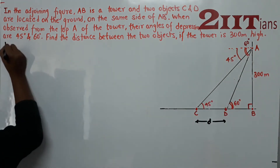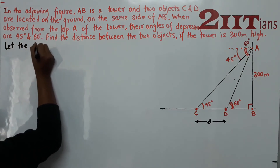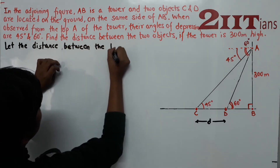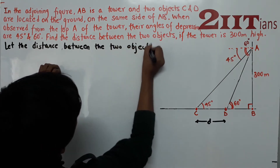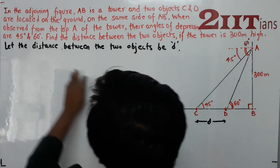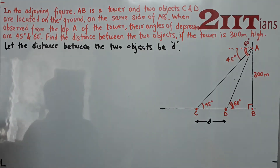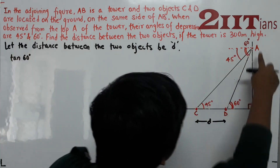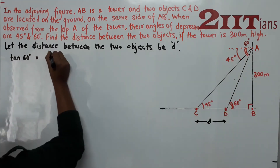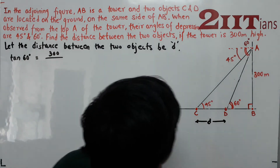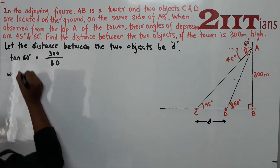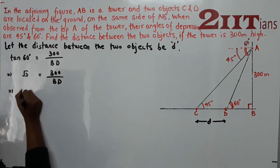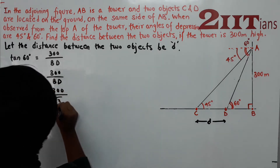Let the distance between the two objects be D. For triangle ABD with angle 60 degrees, height is 300 meters and base is BD. tan(60°) = √3 = 300 divided by BD. Therefore, BD = 300 divided by √3.